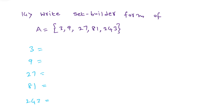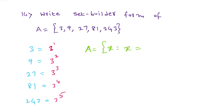If we observe clearly, 3 can be written as 3 power 1, 9 as 3 power 2, 27 as 3 times 3 times 3 = 3 power 3. Similarly, 81 = 3 power 4 and 243 = 3 power 5. So set A = {x such that x = 3^n}. Base 3 is common for every number.